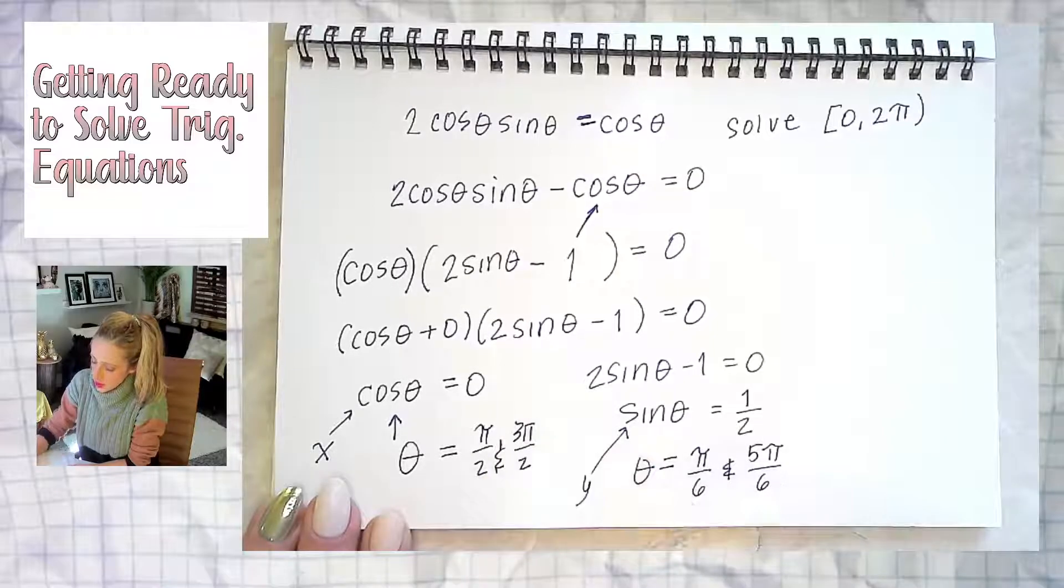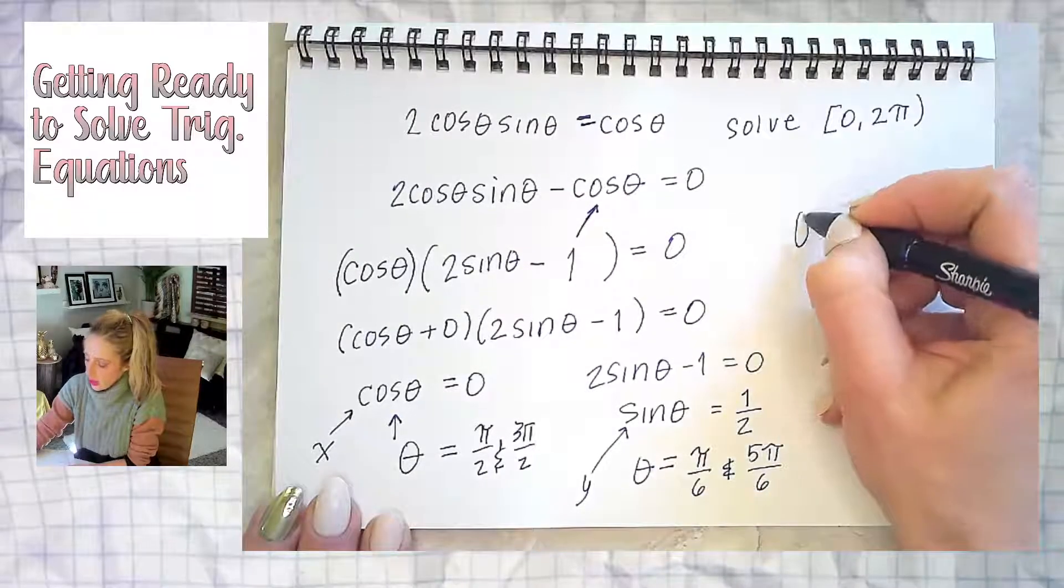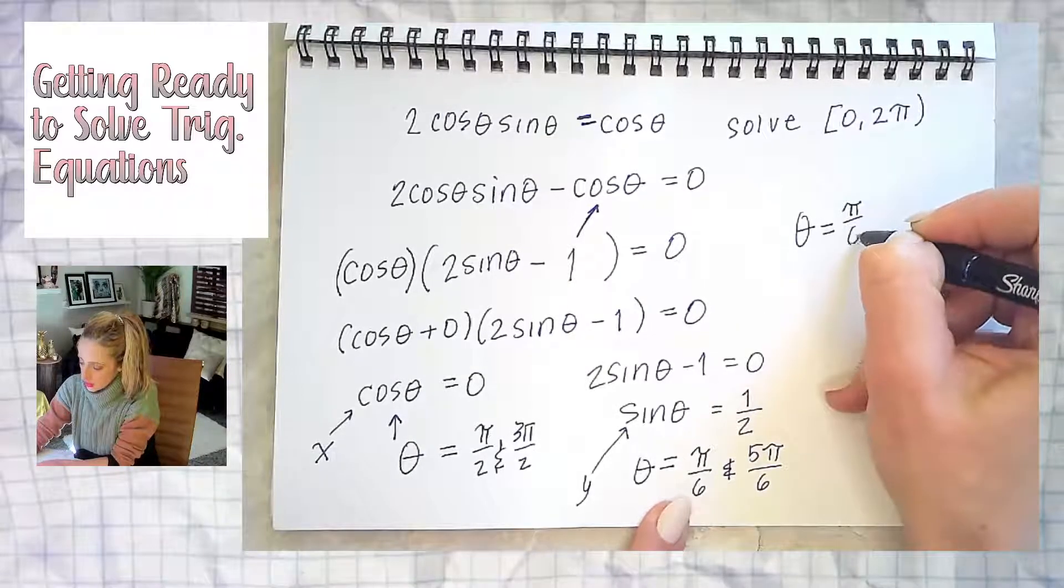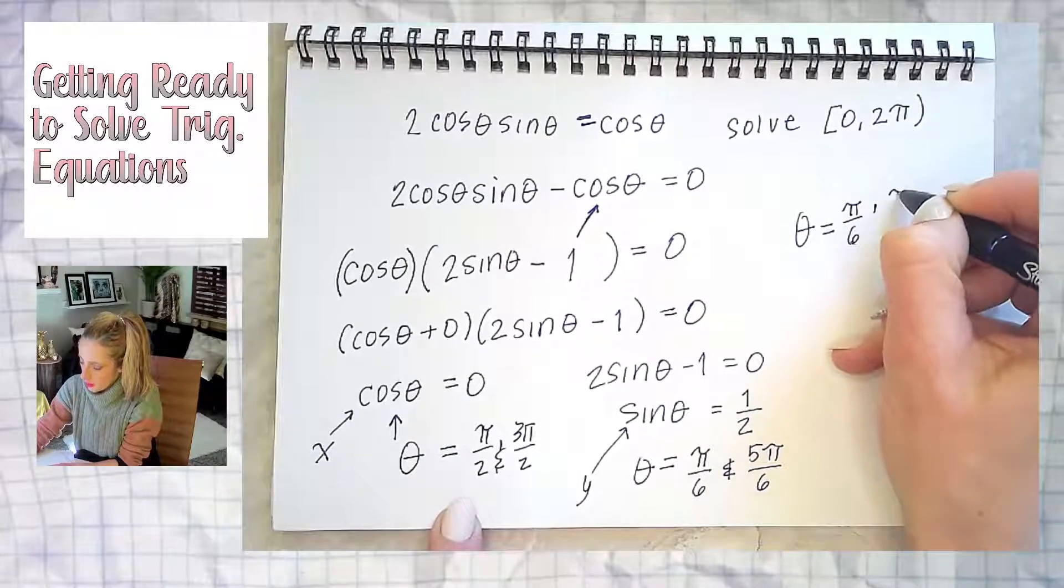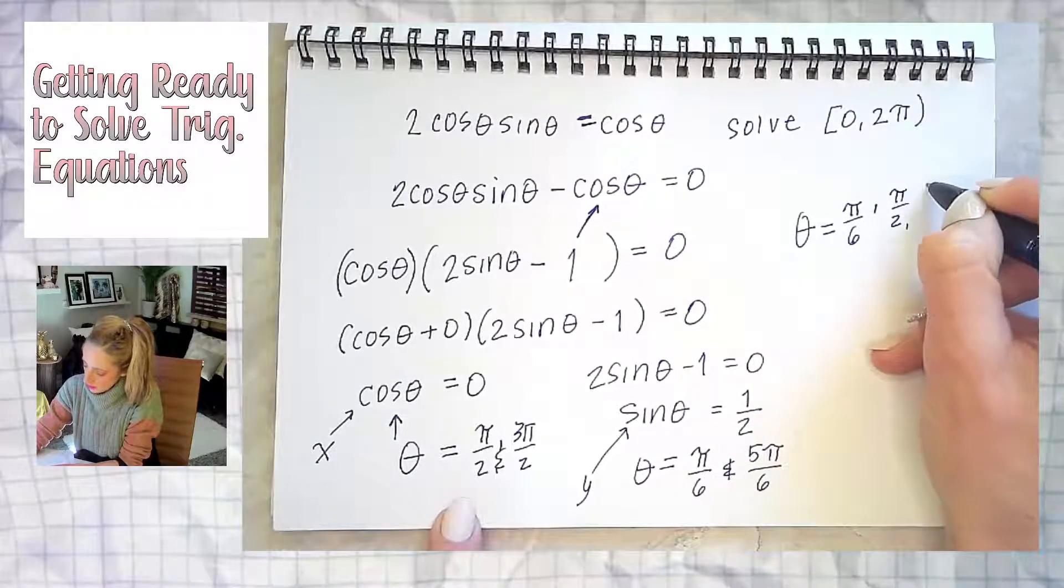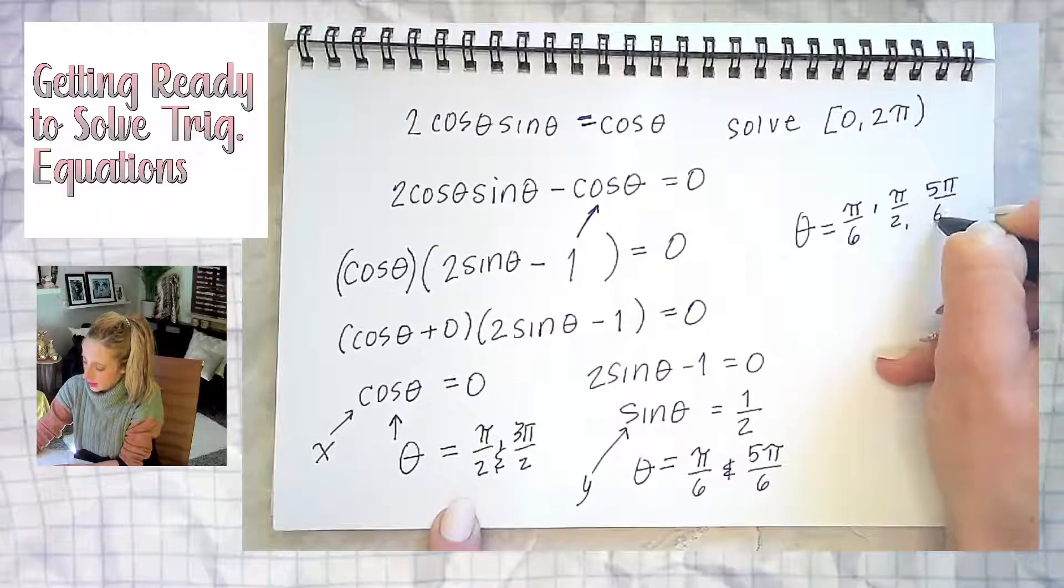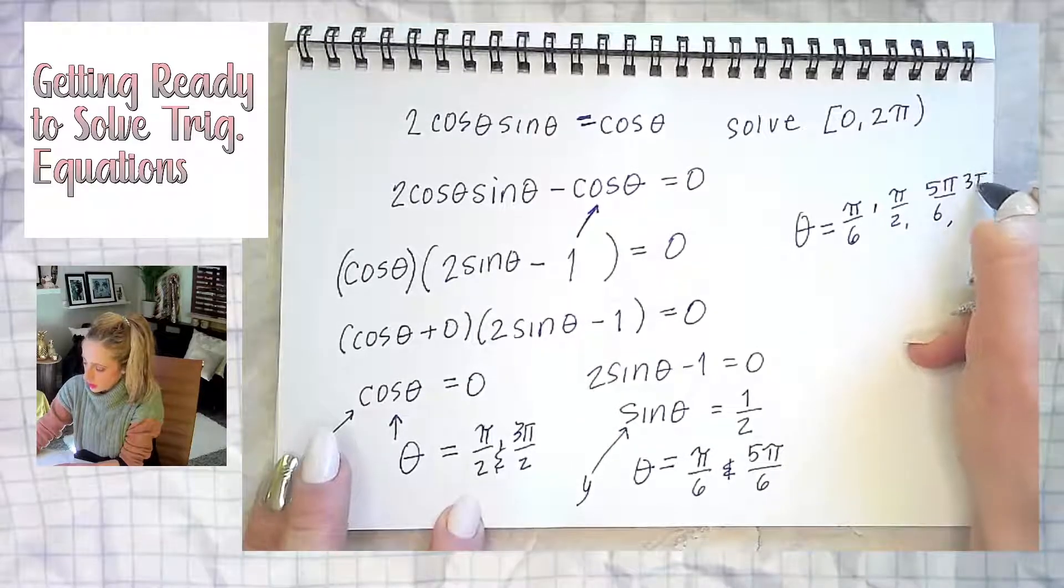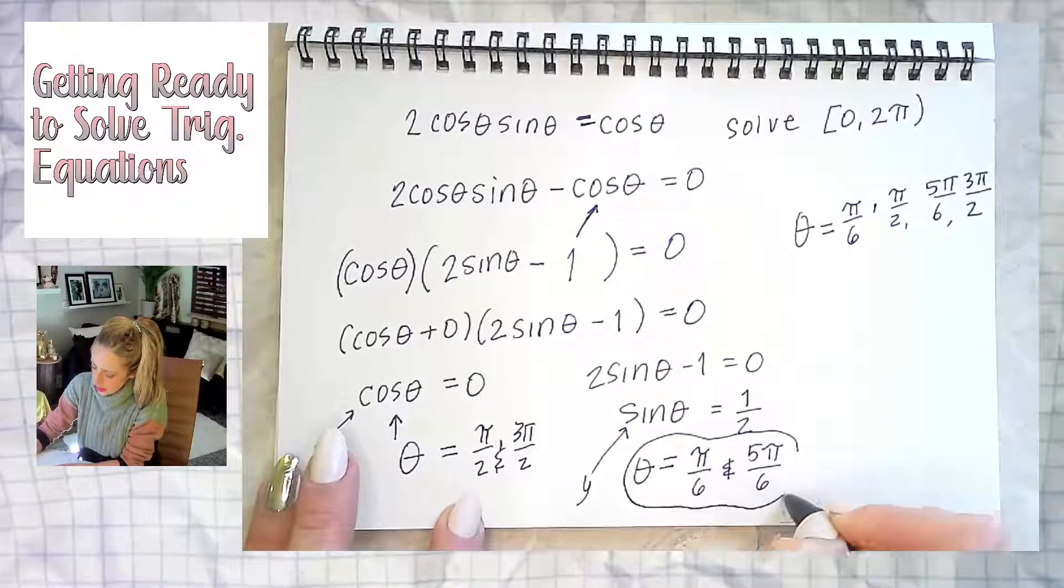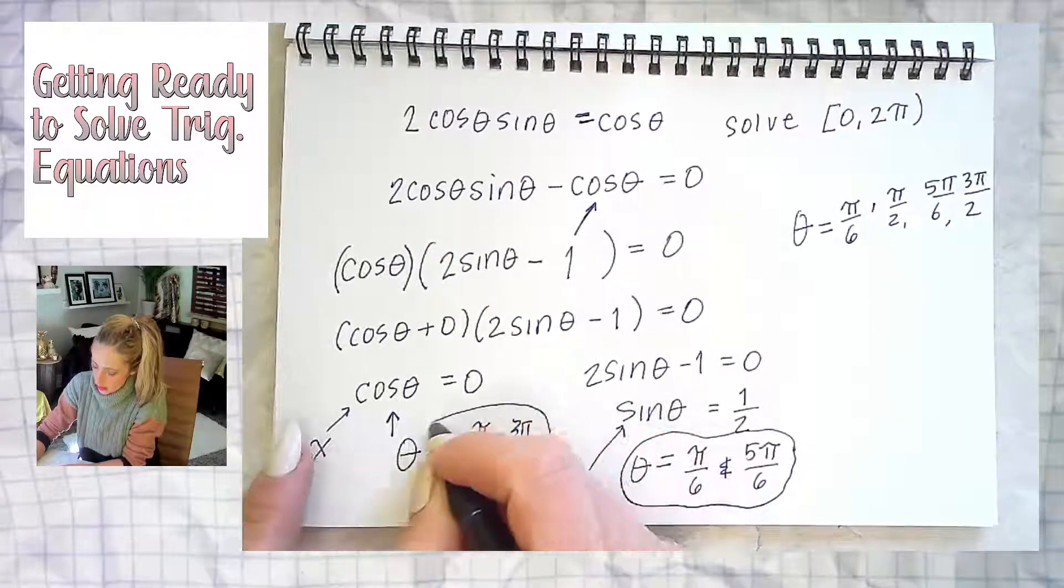So this question has four answers all together. If we list them in order from least to greatest, that would be pi over six is the smallest, pi over two is next, I don't know where my commas are going, sorry. Five pi over six is next, and last is three pi over two. Or you leave it like this, where they're kind of grouped together with their buddy angle.